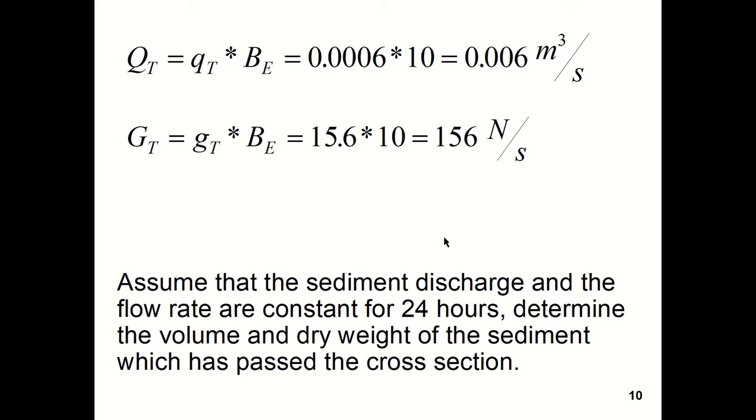Now assume that the sediment discharge and the flow rate are constant for 24 hours. Determine the volume and dry weight of the sediment which has passed the cross section. The volume would be the volumetric sediment transport times the elapsed time. So we put in the numbers and you see the volume of sediment that goes by this cross section in 24 hours is 518.4 cubic meters per day.